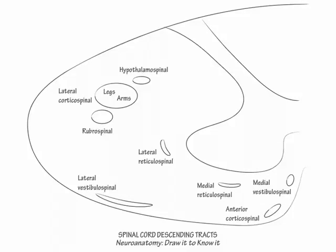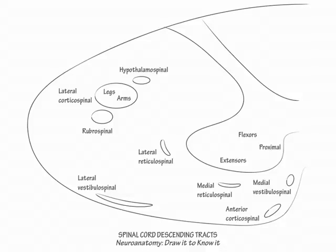Now let's address the posterior-anterior and medial-lateral somatotopy of the motor nuclei in the anterior horns. Label the posterior nuclei as innervating flexor muscles and the anterior nuclei as innervating extensor muscles. Then label the medial nuclei as innervating proximal muscles and the lateral nuclei as innervating distal muscles. You may notice that the gray matter positions of these nuclei parallels the positions of their related white matter tracts.